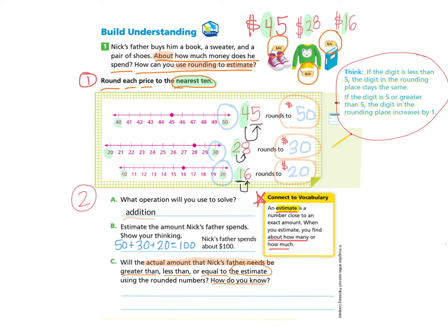So one way we could find out the actual amount is if we take all of the prices that were given and we add them together. That's one way that we can find that actual amount and compare it. But we also have a way of looking at our number lines that we created. And we see all of the actual numbers on the number line.